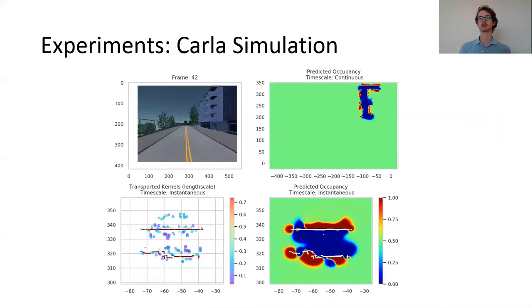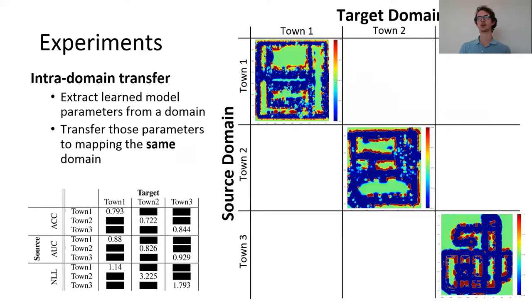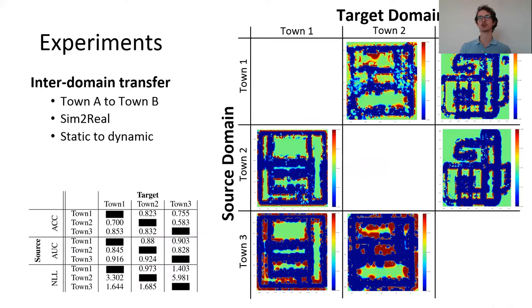In the simulation experiment we demonstrate transfer from one part of the domain to the rest. Next, we wanted to demonstrate parameter transfer across different domains. This experiment covers various transfer learning paradigms such as simulation to real and adapting from static to dynamic environments.